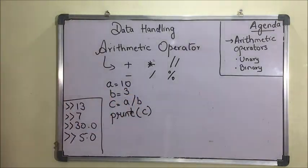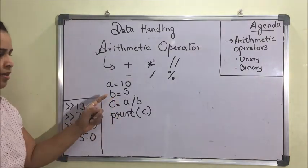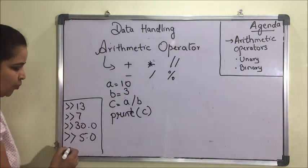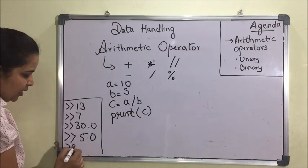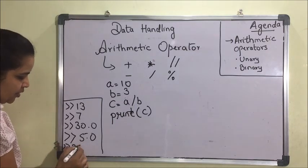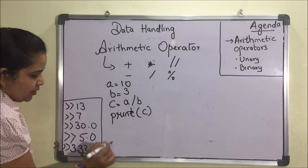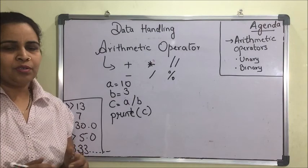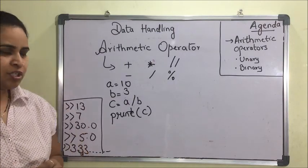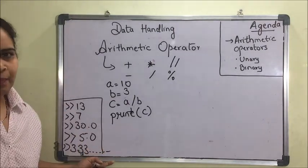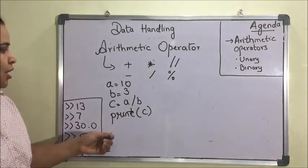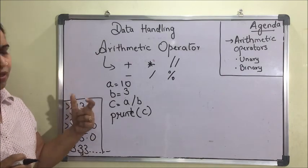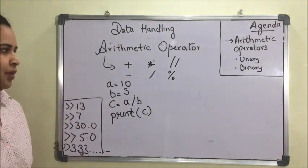If we store 3 in b and run the program, the output will be 3.33 up to 16 decimal places. So in Python 3.5/3.7.4, the decimal point will be up to 16 digits. When using division, the output will always be a float number.